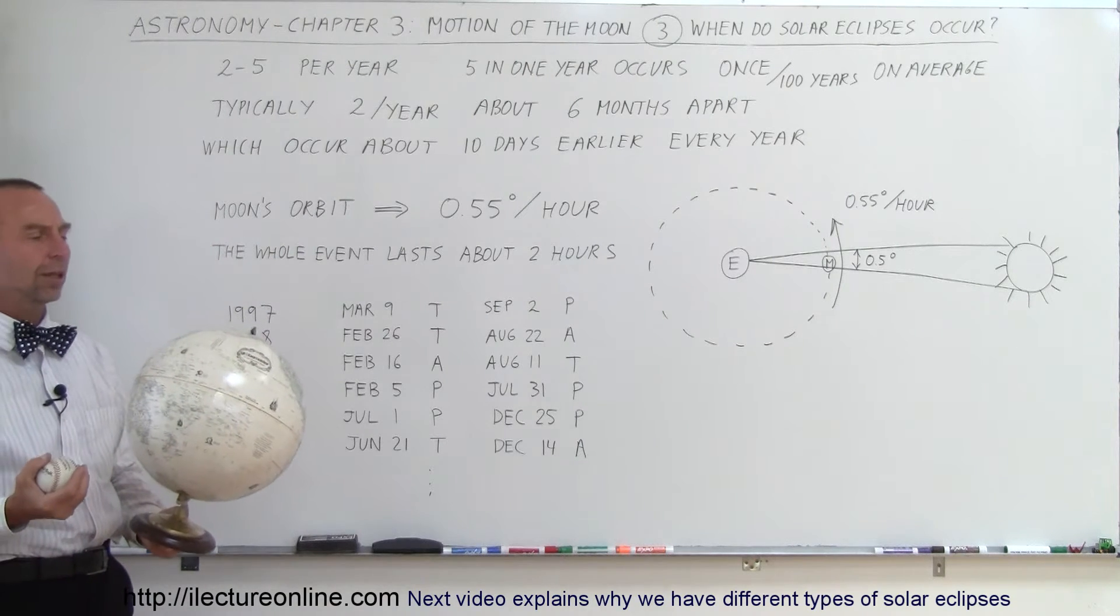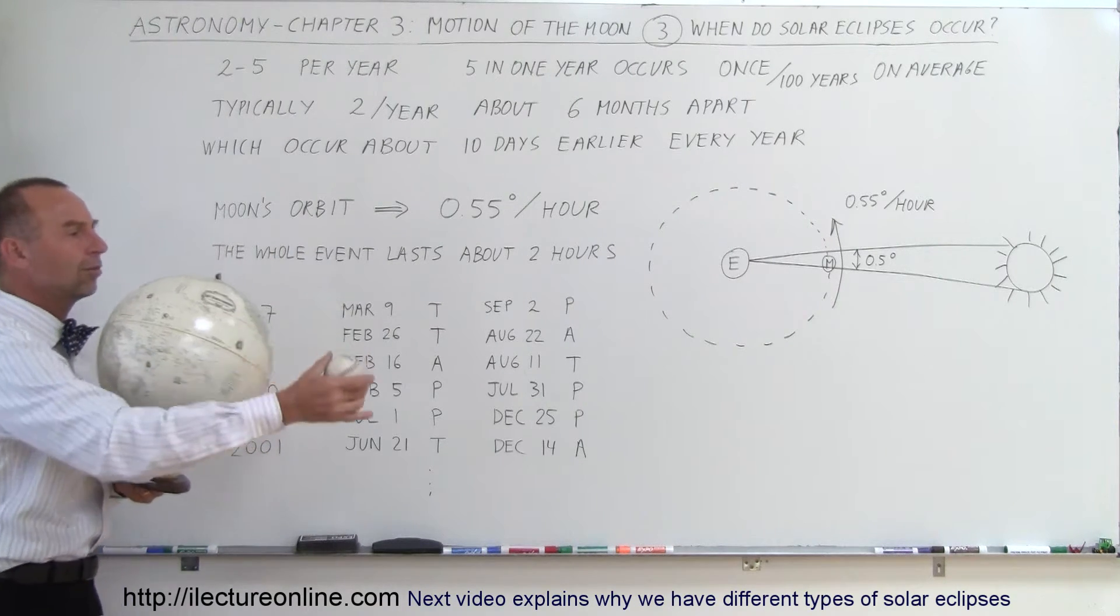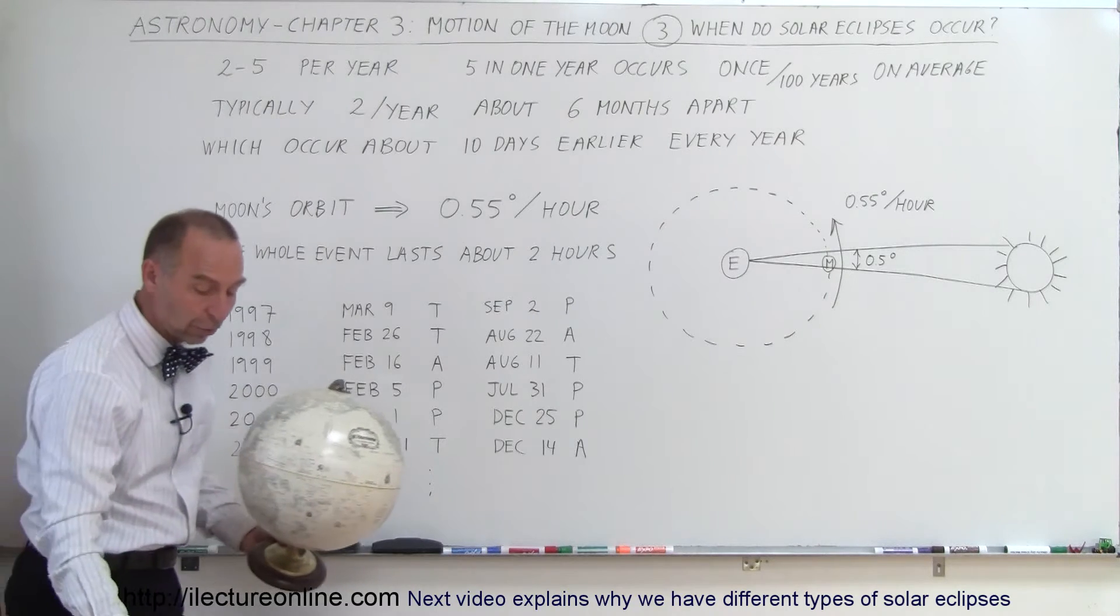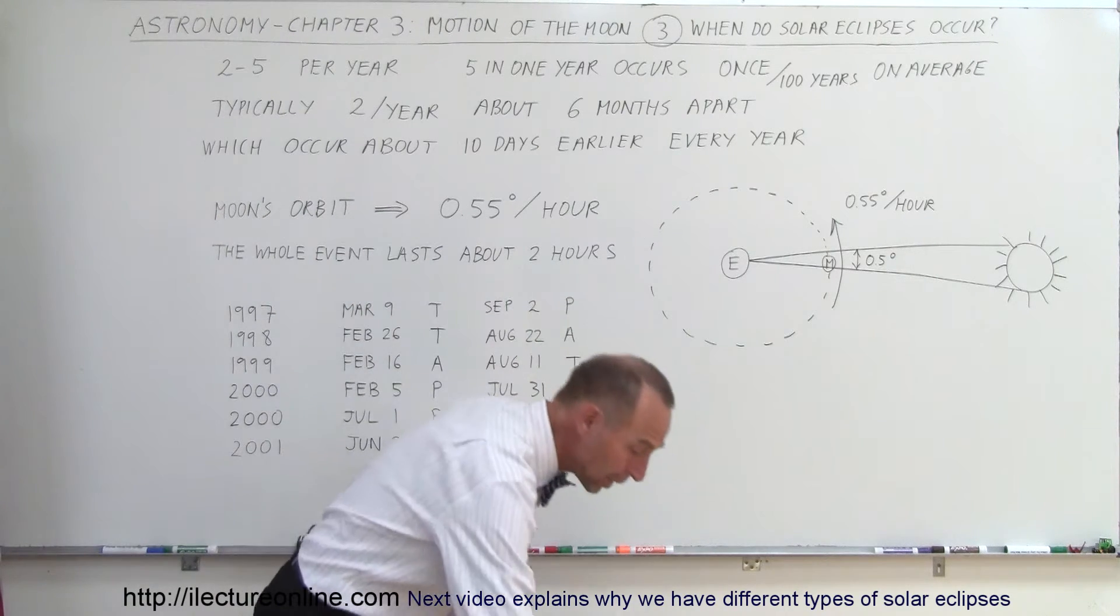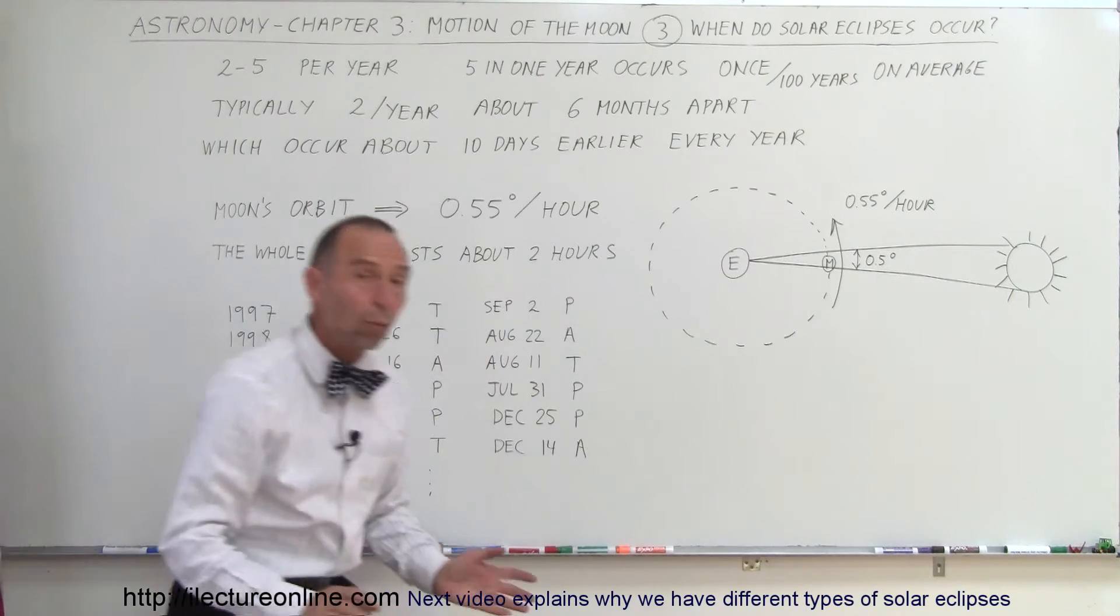And therefore cause a solar eclipse. So that happens once here, and then once again about six months later. So what we find is that typically, a solar eclipse occurs about twice a year.